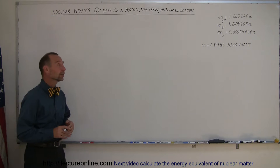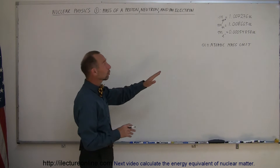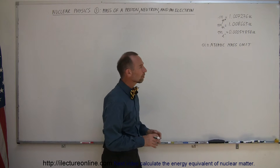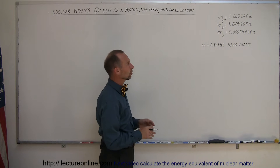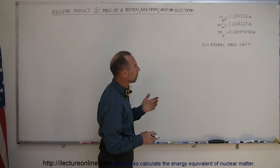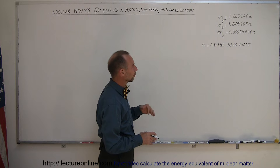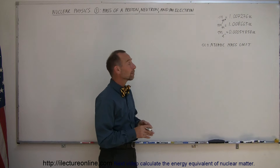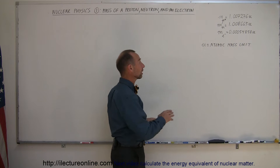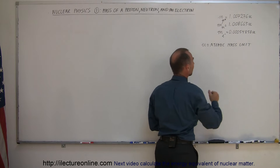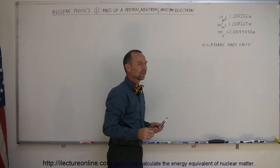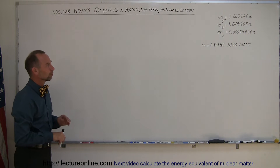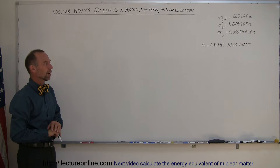I wrote down in the corner here the mass of those three particles in terms of atomic mass units. You can see that for the mass of a proton and a neutron, it's approximately one atomic mass unit. And for an electron, it's far less than that because the mass of an electron is about 1/2,000 the mass of either a proton or a neutron.